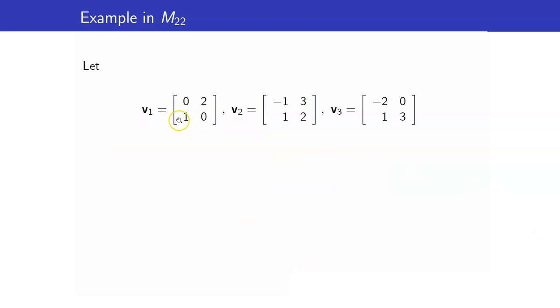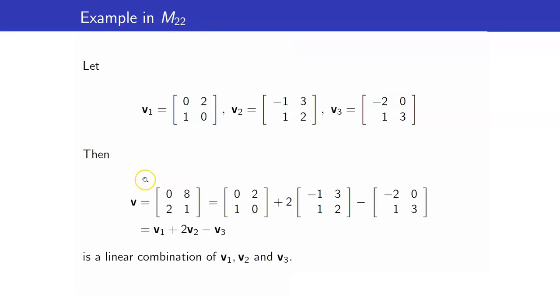Another example, I have these three vectors here. I am now working in the vector space M22, the set of 2 by 2 matrices. And if I form this linear combination here, this is my V1, my scalar is 1. This is V2, and I multiplied it with the scalar 2. This is my V3, and I multiplied it with negative 1. So we say that this vector V is a linear combination of V1, V2, and V3.